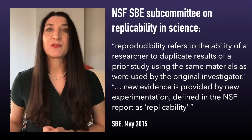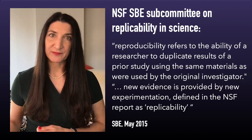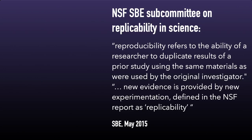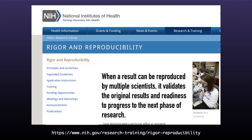The report also states that reproducibility is the minimum necessary condition for a finding to be believable and informative. The National Institutes of Health has a broad effort with a whole section of their website dedicated to the issue, focused on preclinical research. NIH is the largest U.S. government funder of research and their commitment to reproducibility is vigorous and visible. They have organized numerous events to raise community awareness — workshops and meetings with professional societies and publishers — with multiple events every year focusing on reproducibility, open science, and related topics.